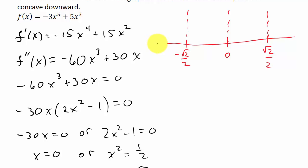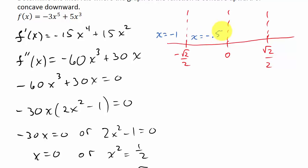We need to choose an x value from each region — it doesn't matter which value as long as we get one from each. The square root of 2 over 2 is about 0.7, so the boundaries are roughly ±0.7. I'll choose x equal negative 1 for the first region, x equal negative 0.5 for the second, x equal positive 0.5 for the third, and x equal 1 for the fourth. We then plug each value into the second derivative.